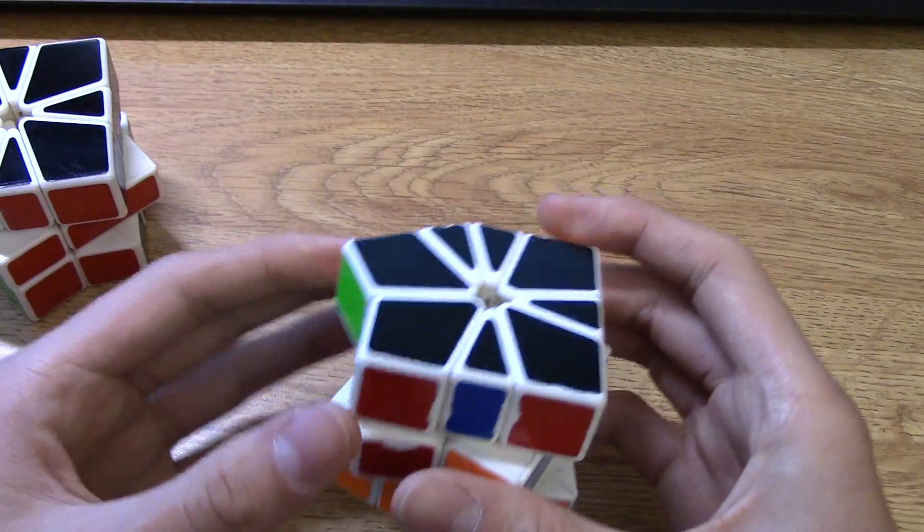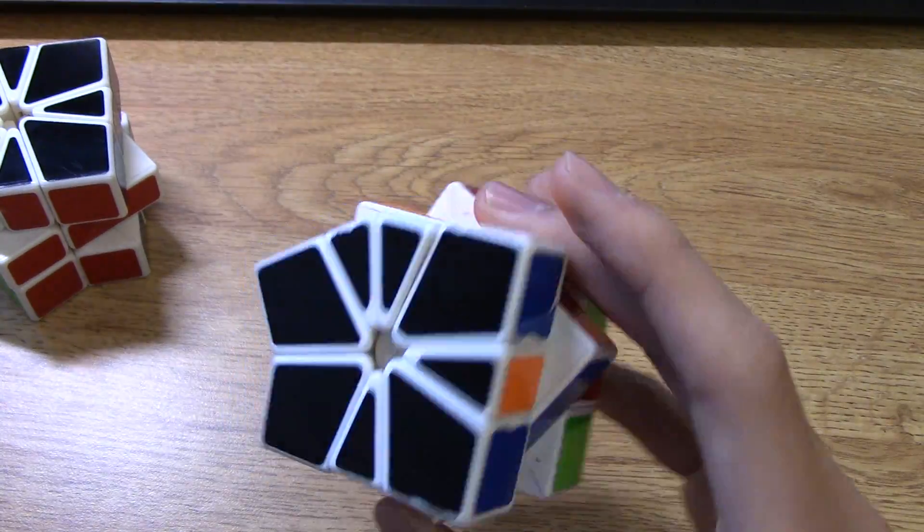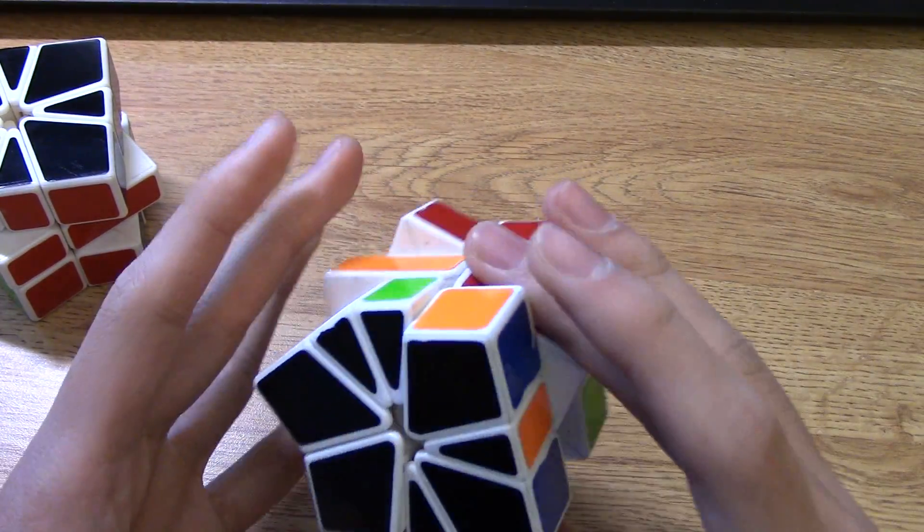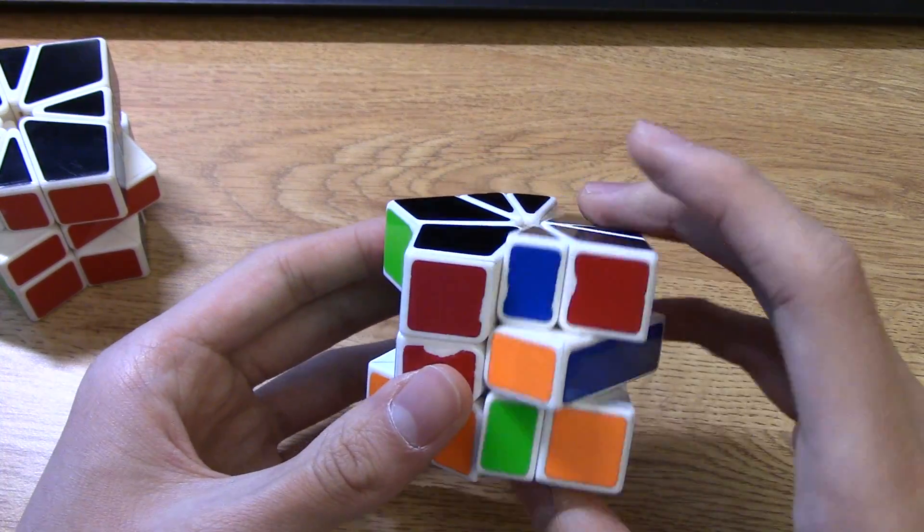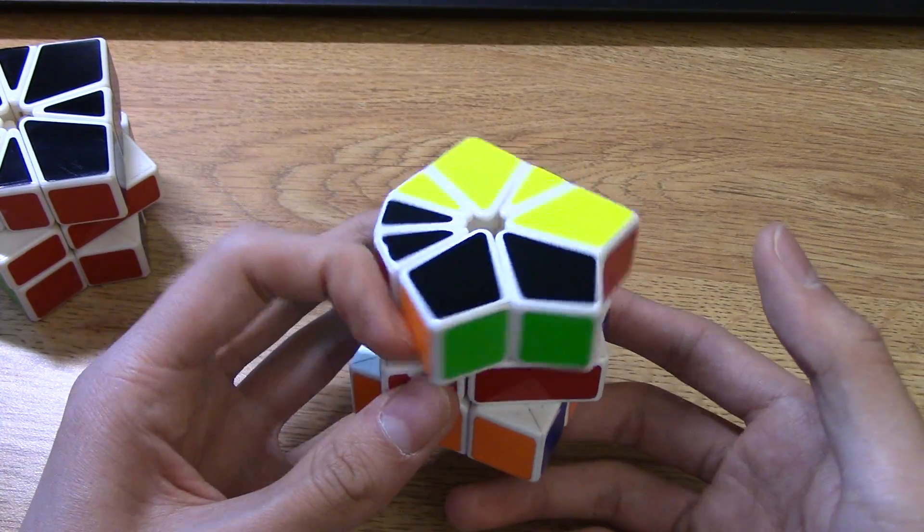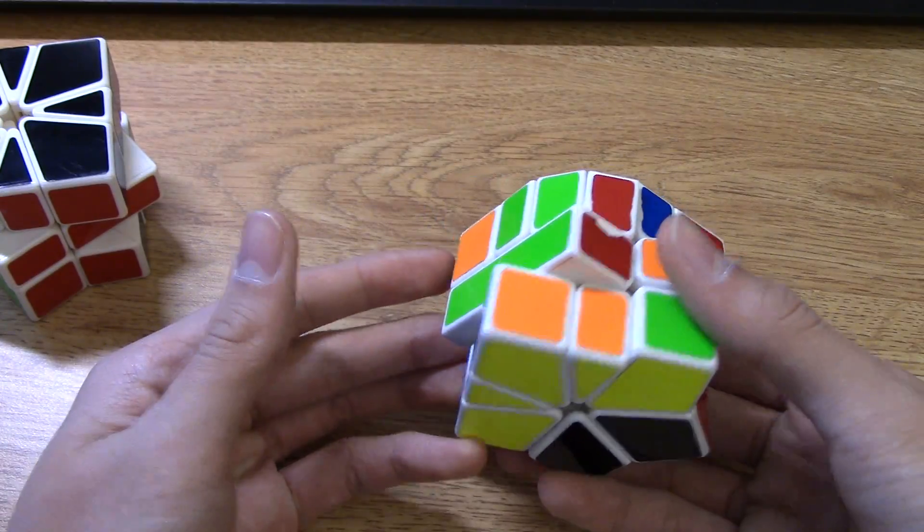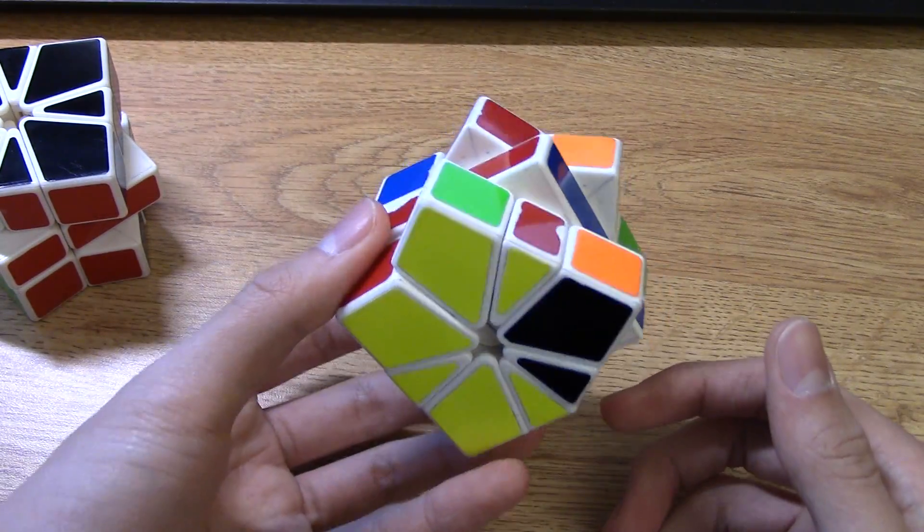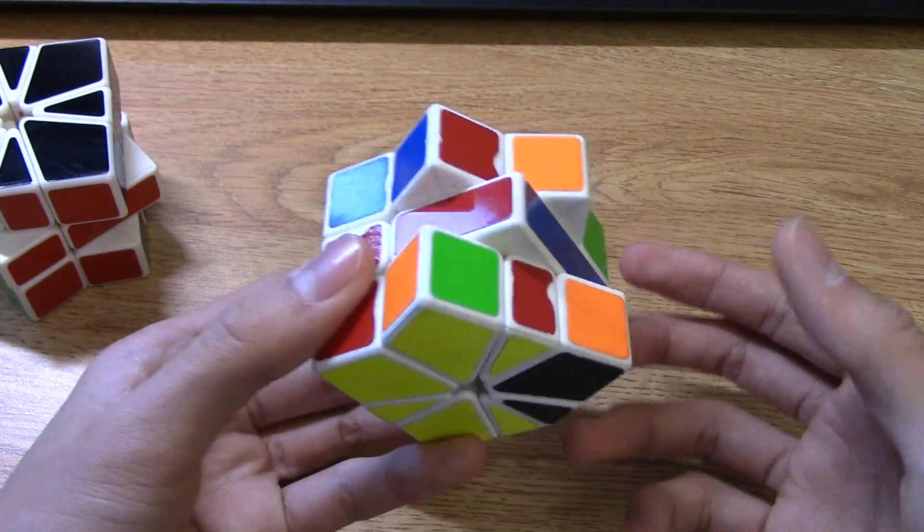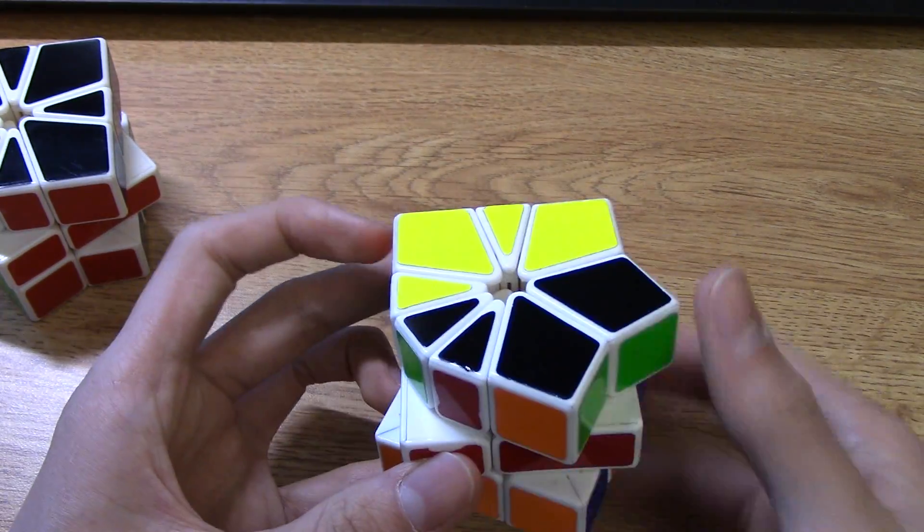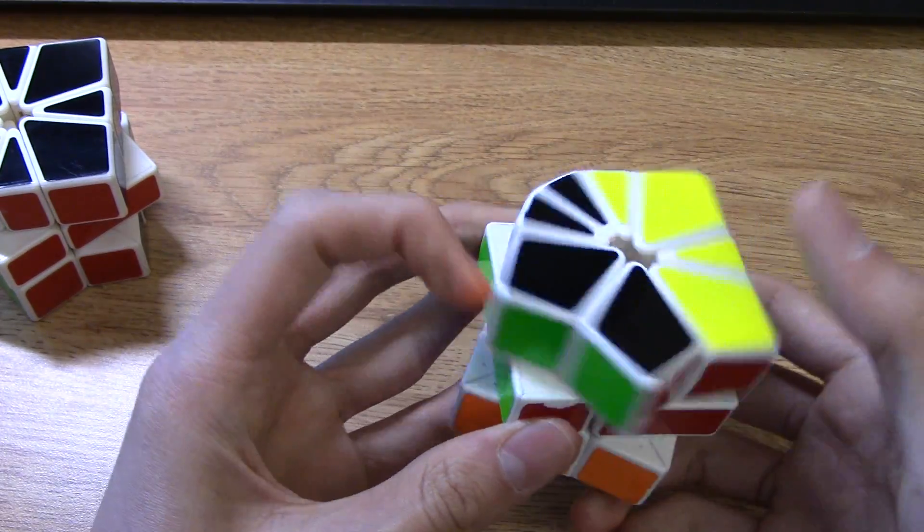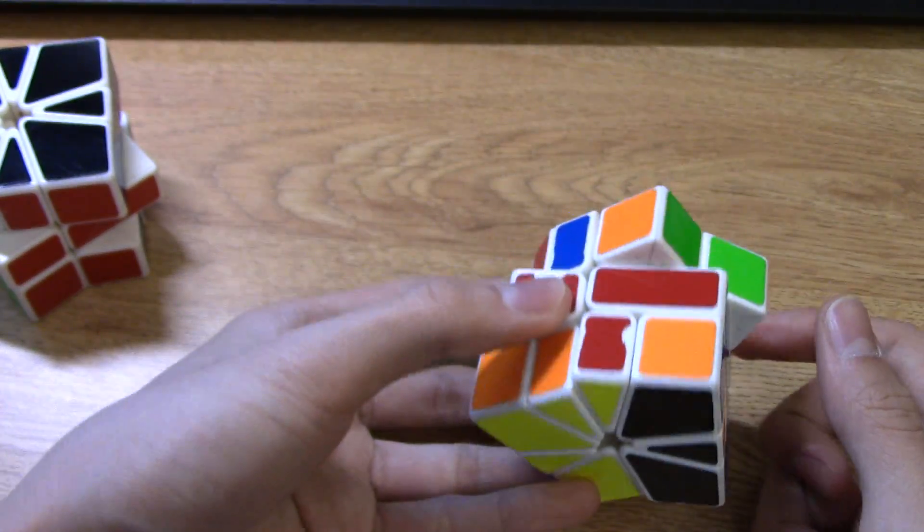We can do the same thing for fist. Direction of the fist doesn't matter. Actually, not direction. The chirality of the fist. So if we wanted to do even parity, we would move the d layer like this and get scallop kite like that. And if we wanted odd parity, we would not move the d layer at all and just get scallop kite like that.